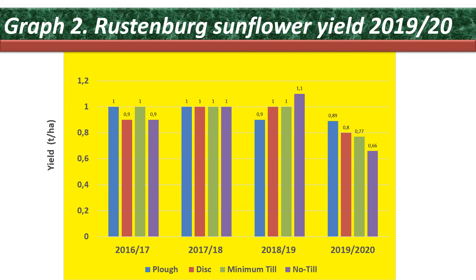Graph 2 shows the sunflower yield for 2019–2020. We realized that 2019–2020 had the lowest yield results overall. The highest was the plough every year treatment at 0.8 tons per hectare, followed by disc at 0.8 tons per hectare, then minimum tillage at 0.7 tons per hectare, and the lowest being no-till at under 0.6 tons per hectare. There is a clear trend connecting the rainfall pattern with the treatment yield results.